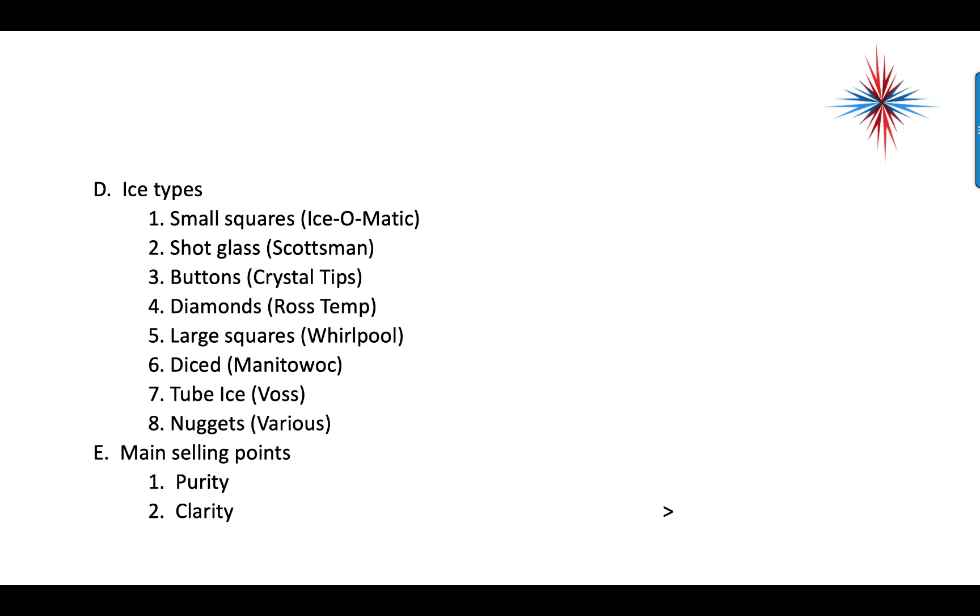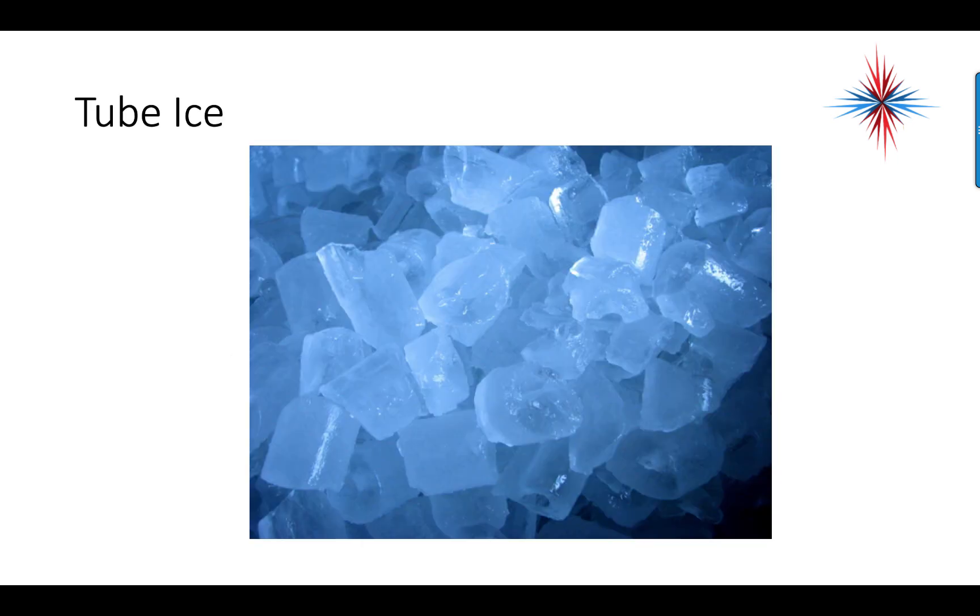We might have small squares by Ice-O-Matic, shot glass type by Scotsman, buttons by Crystal Tips, diamonds by Ross Temp, large squares by Whirlpool, diced by Manitowoc, tube ice by Voss, and nuggets by various manufacturers. The main selling points of ice machines is the purity and the clarity of the ice.